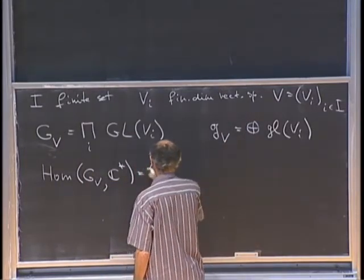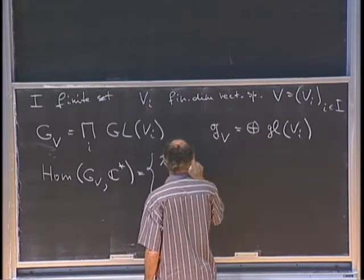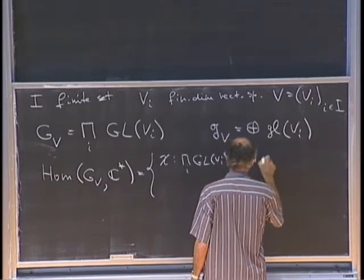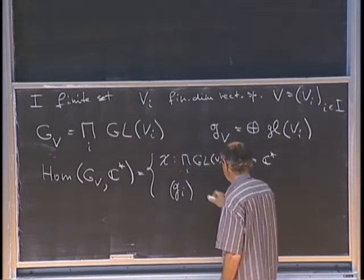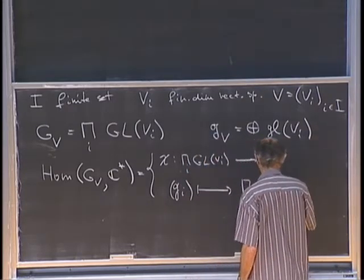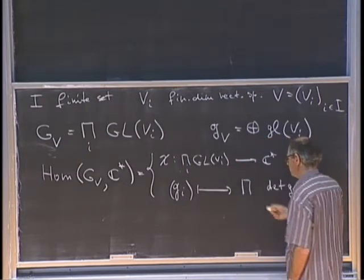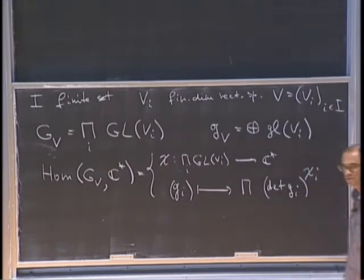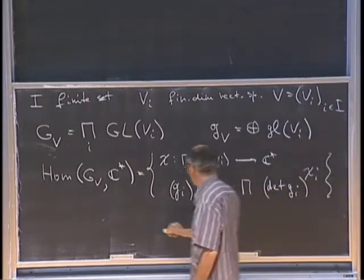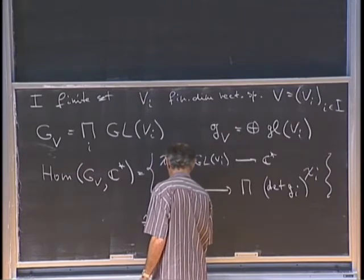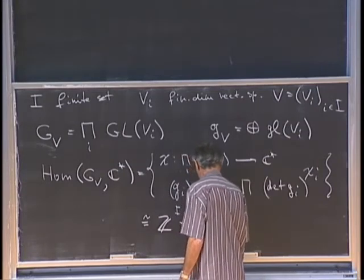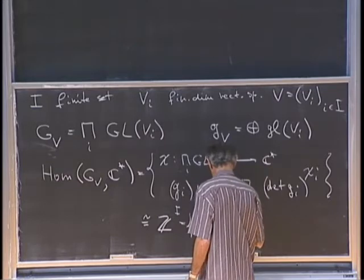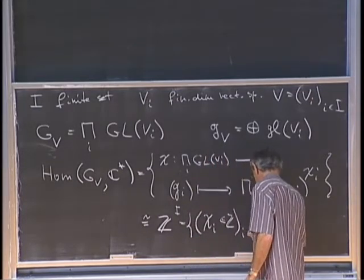A character is a map from the product of GL(V_i) to C-star. Any such character takes an I-tuple of invertible matrices to the product of determinants of these matrices, each raised to some integer power chi_i. So the set of all characters is identified with Z to the I, i.e., I-tuples of integers chi_i — one integer for each i.